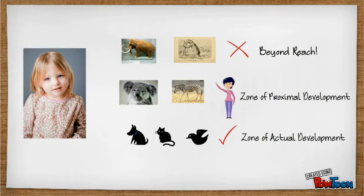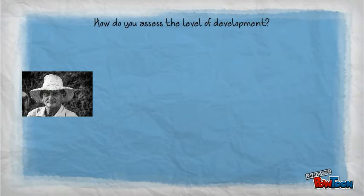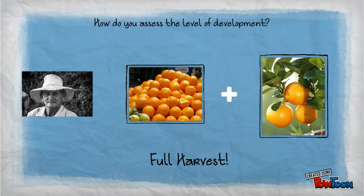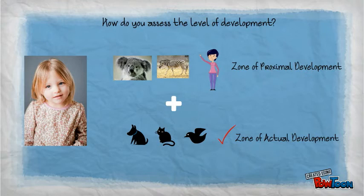So how do you assess the level of development? Vygotsky uses the metaphor of a fruit farmer who is assessing his harvest. The farmer would consider a full harvest as the matured fruit and also the fruit that is still maturing. Similarly, Vygotsky states that in order to assess the development level, you must consider the development that has already been matured or actualized, as well as development that is still in the maturing stage.